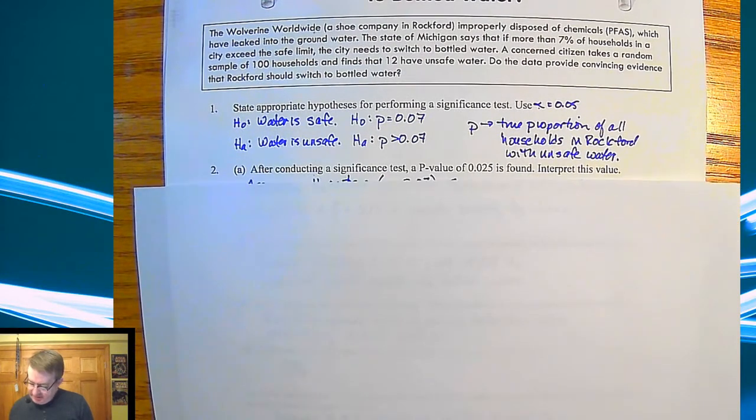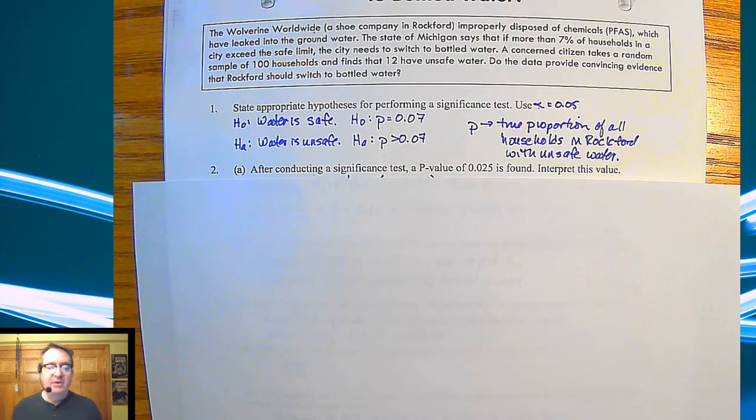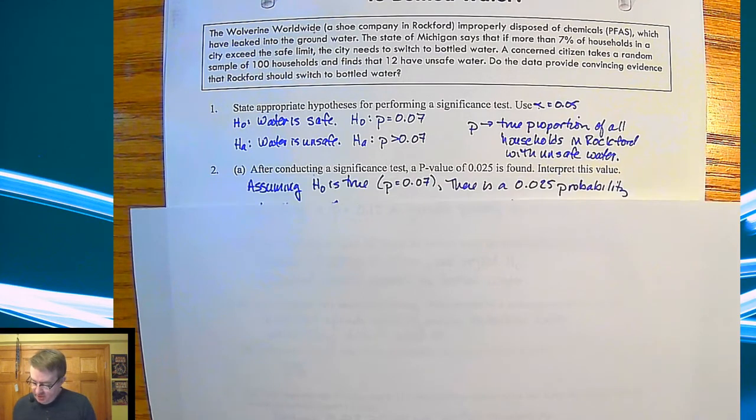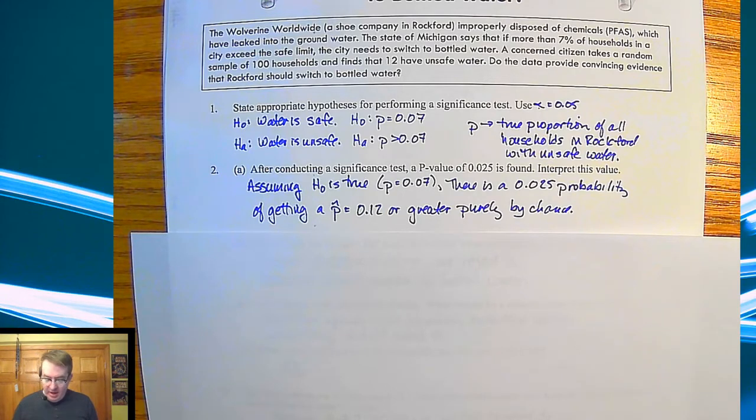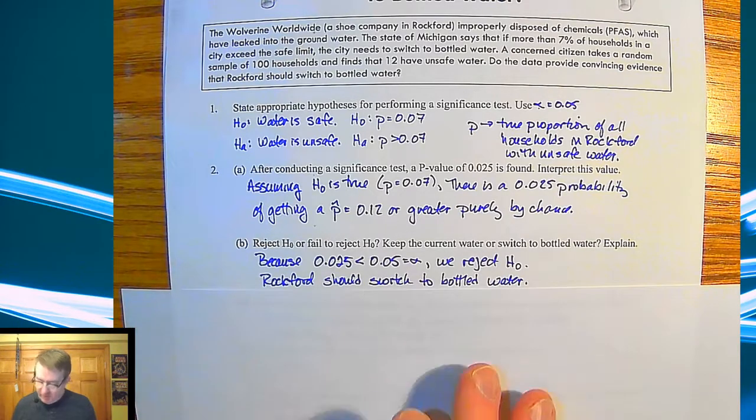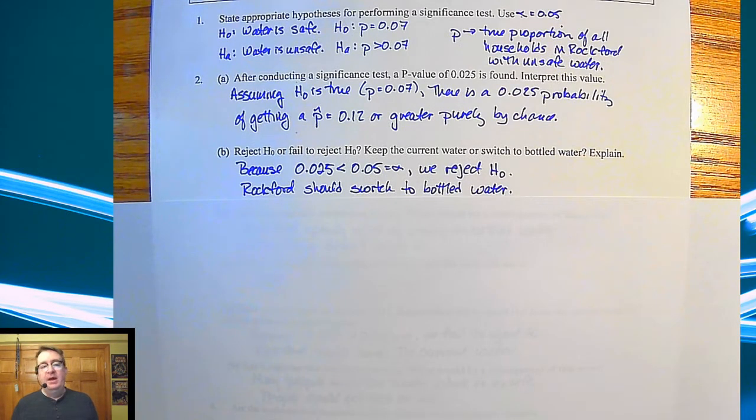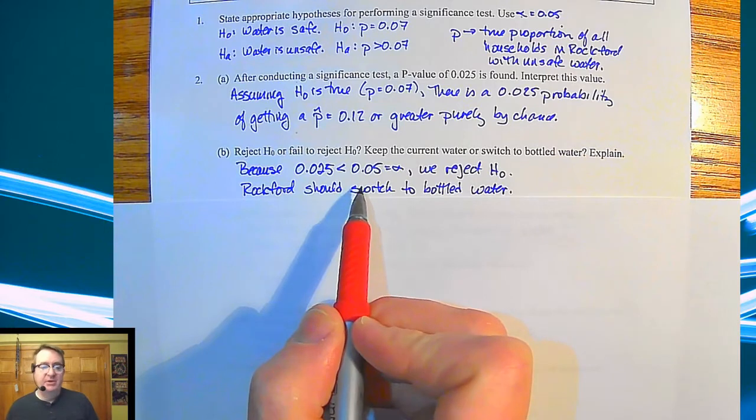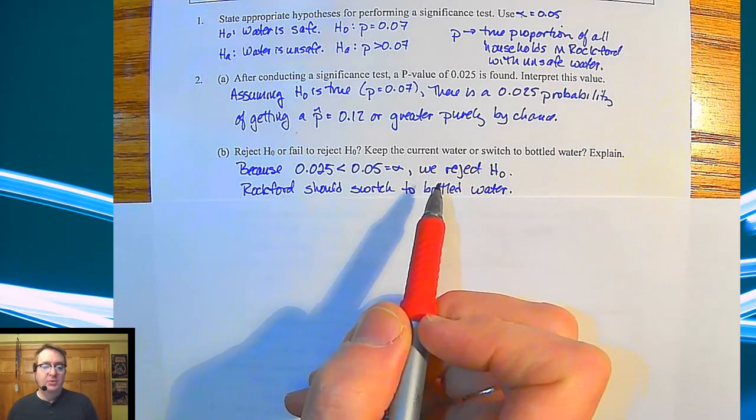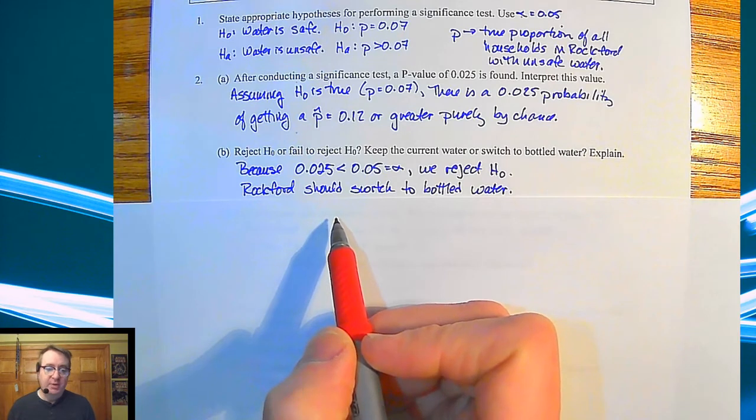So after conducting a significance test, the P value comes out of 0.025. Interpret this value. So just like we've been doing, assuming the null hypothesis is true, that P is equal to 0.07, there is a 0.025 probability of getting a P hat value of 12% or greater, purely by chance. So we definitely are hitting the alpha value. And so the question then falls, do we reject the null hypothesis or fail to reject it? And because 0.025 is less than our alpha value of 5%, we reject the null hypothesis. Rockford should switch to bottled water.